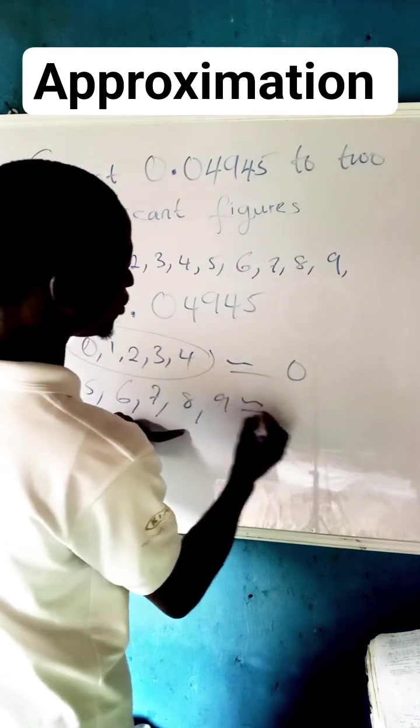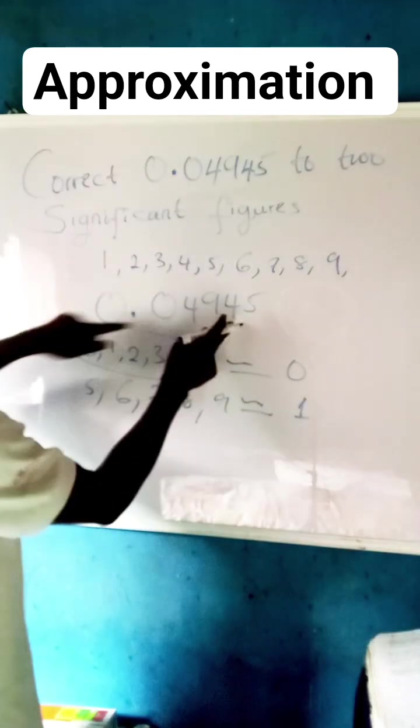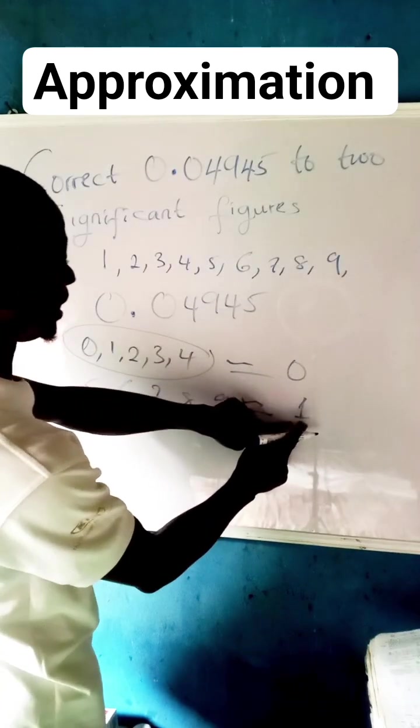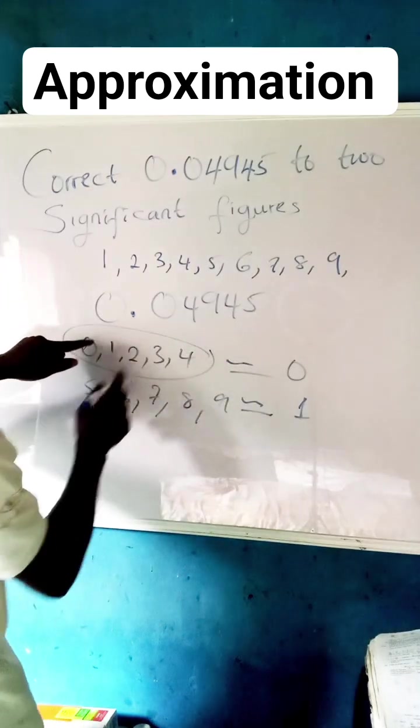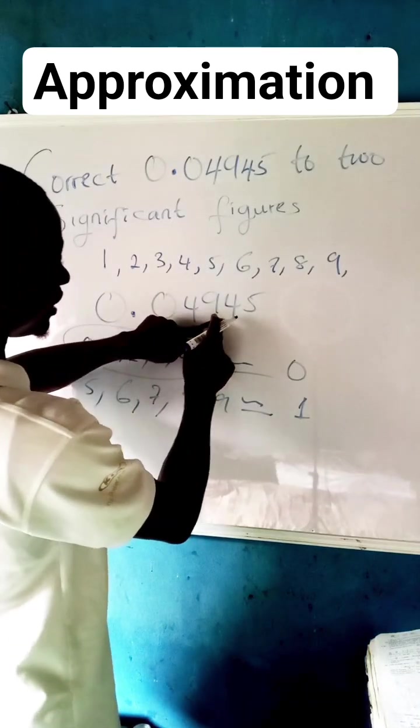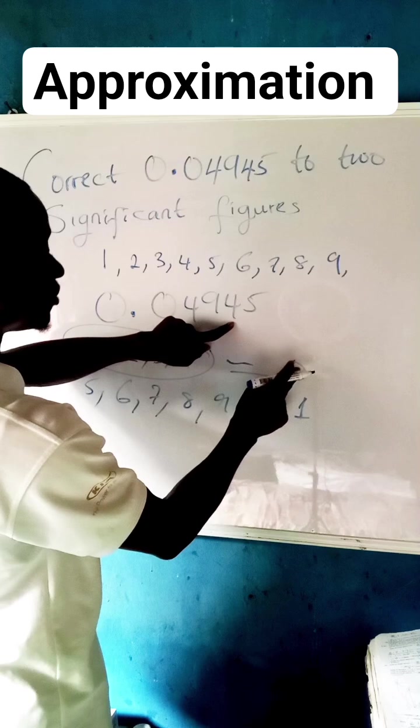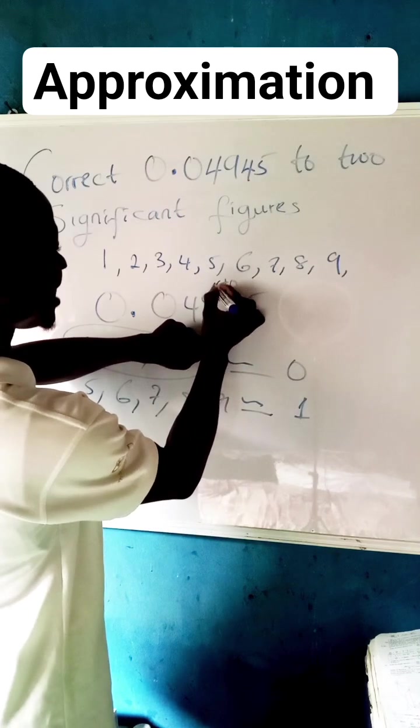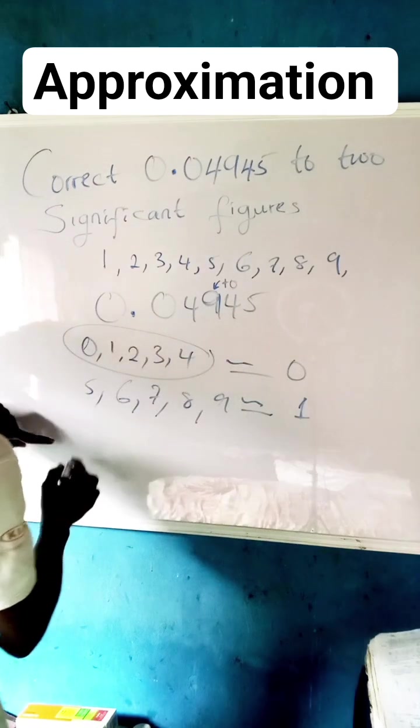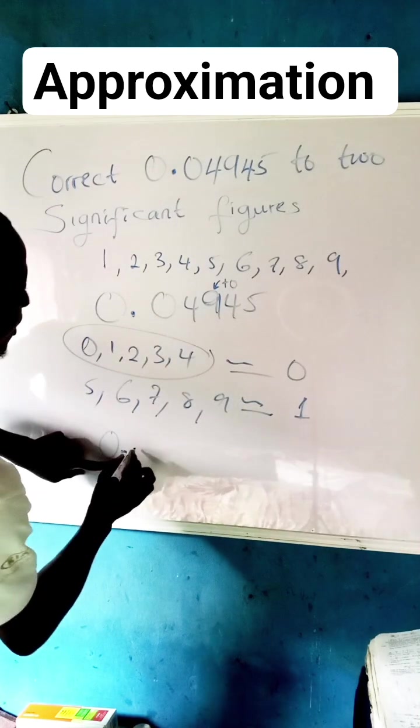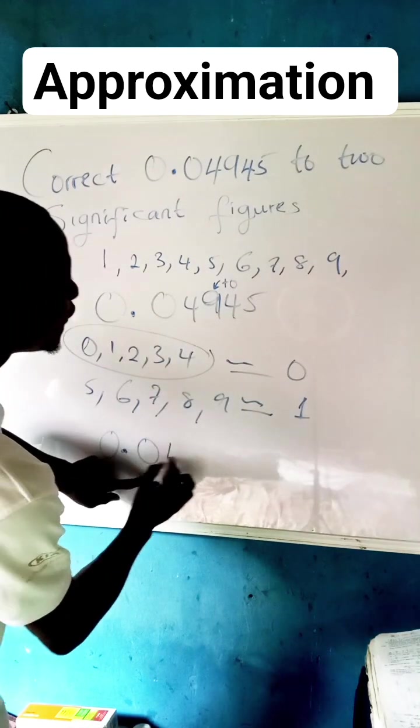So let us check now: is 4 rounded up to 0 or rounded up to 1? It's rounded up to 0 because it is in this range. So we now count 1, 2. Our next one is 4, so it's rounded up to 0. And we add 0 plus 9 equals—see what it still gives us? 9. So my answer will now be 0.049 to two significant figures.